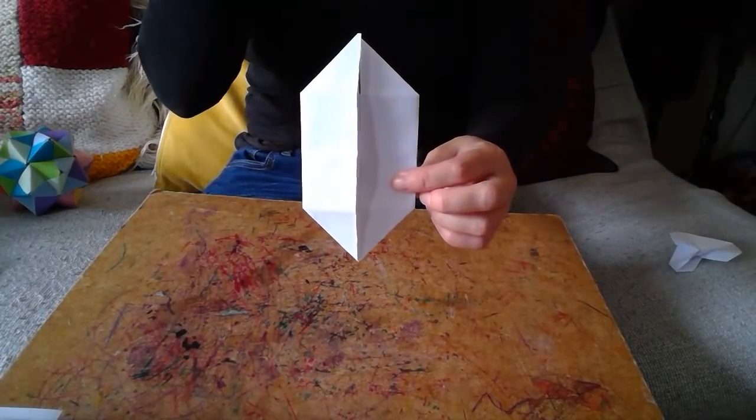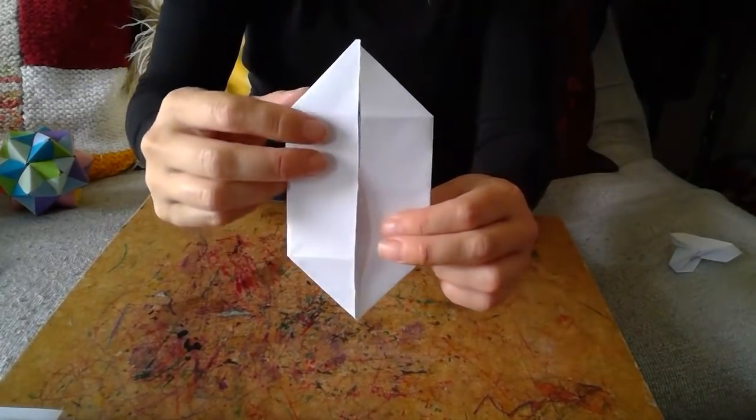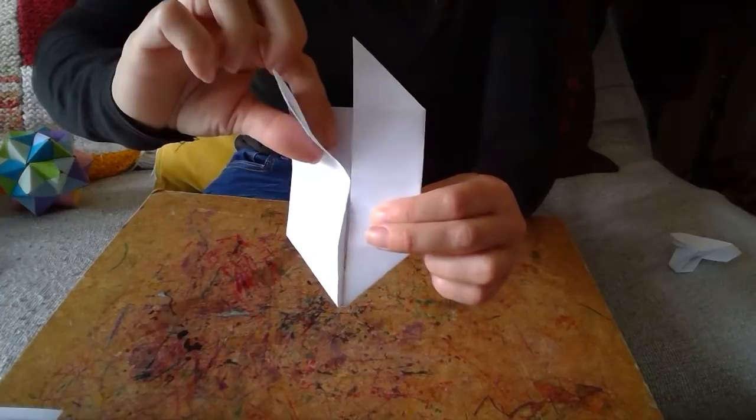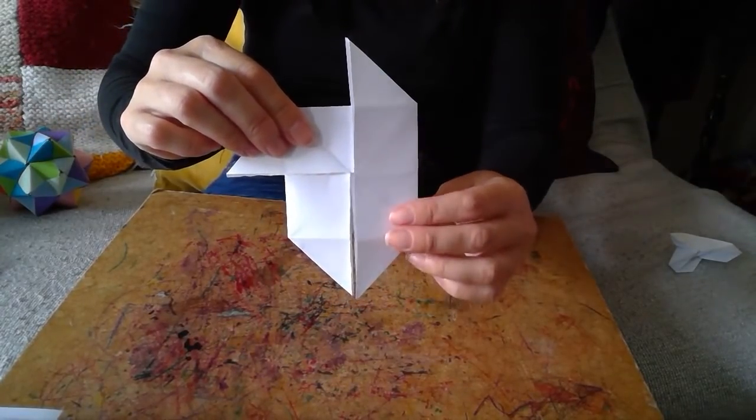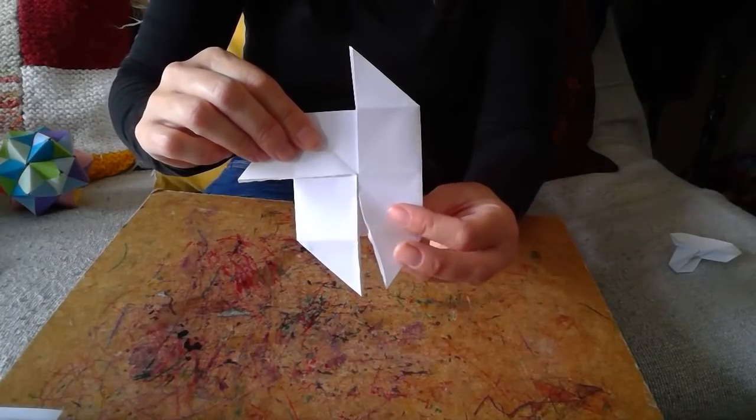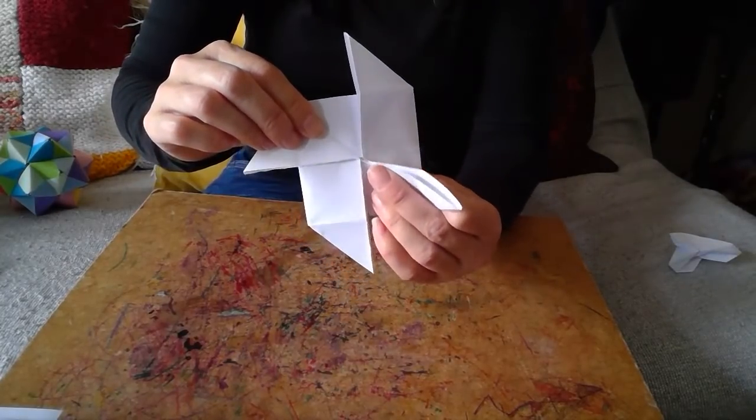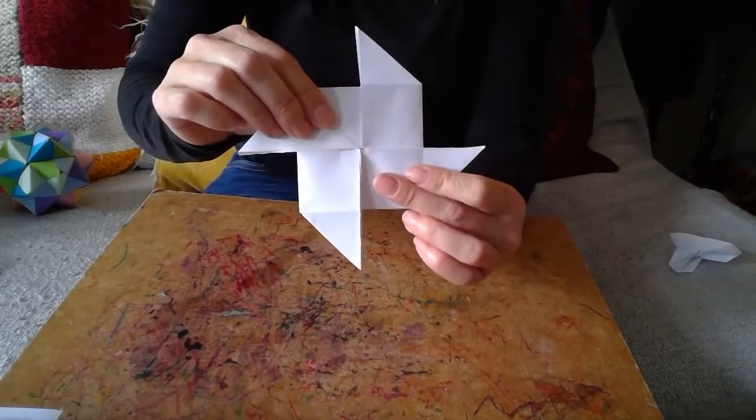So it should look like this kind of shape. Now we're going to turn it into a sort of windmill shape. So if you take one side and fold it down so it sticks out like so. And the same with the opposite corner. So I'm going to take this corner and fold it up. So now it looks like a windmill.